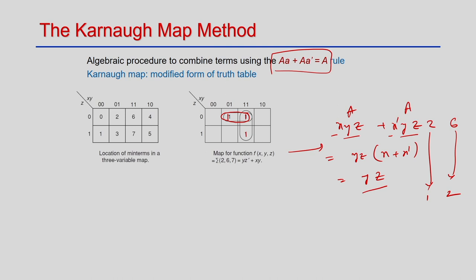In the Karnaugh map, you put 1s in the positions corresponding to the minterms of the function. Our objective is to cover all the 1s with the minimum number of cubes, where each cube results in one product term, and we want as large a cube as possible. A larger cube means fewer literals.